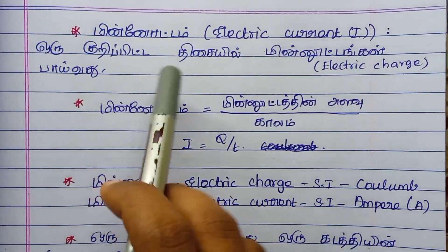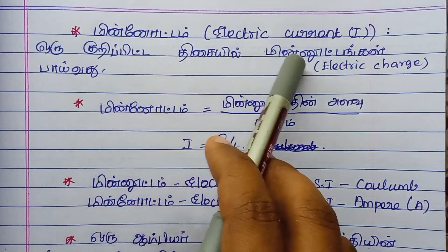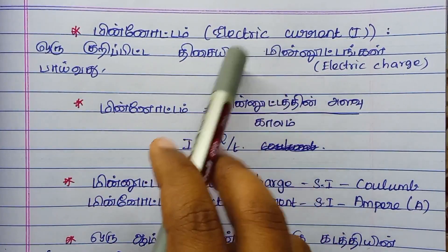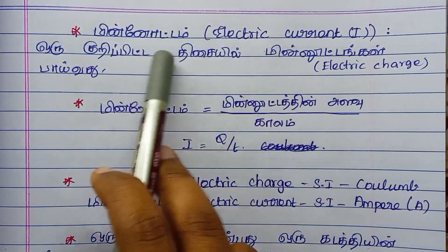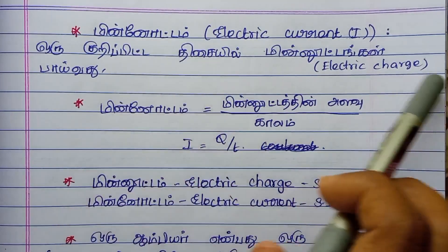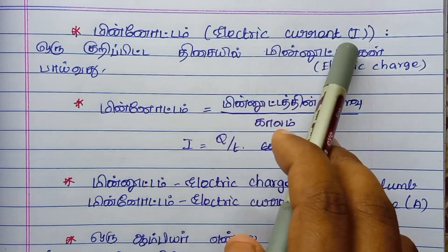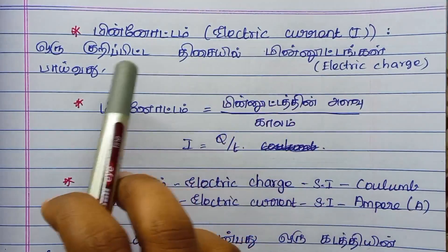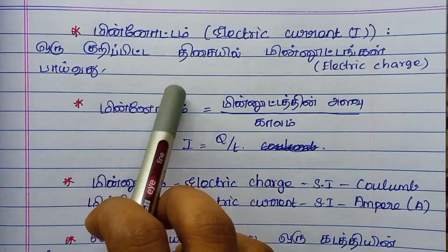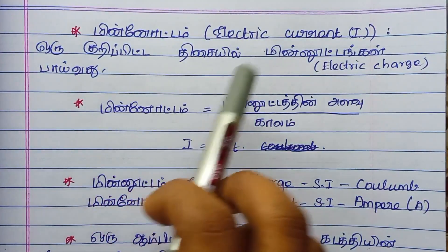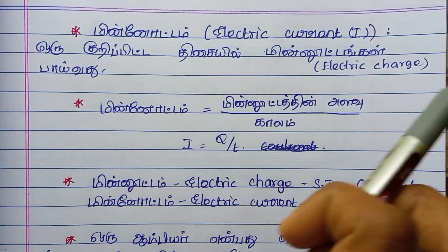The next fundamental quantity is electric current. Electric current is denoted by the letter I. When charges move, electric current flows.